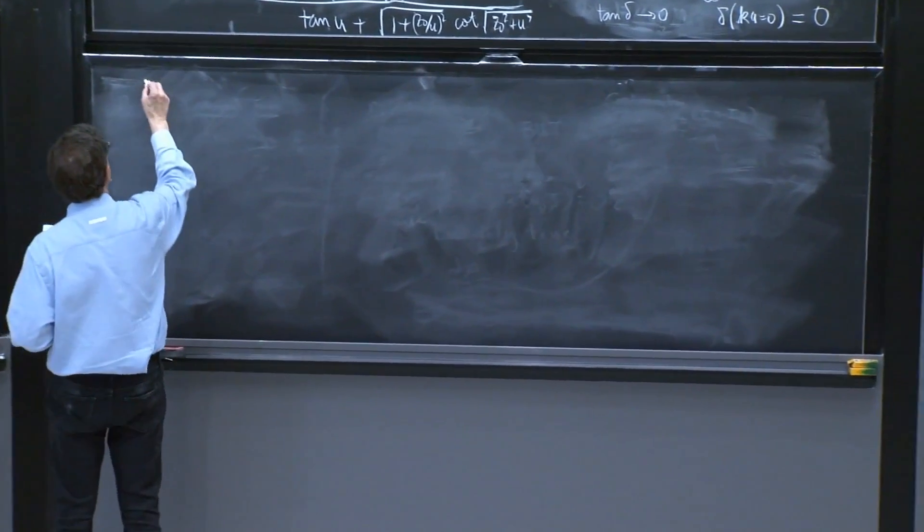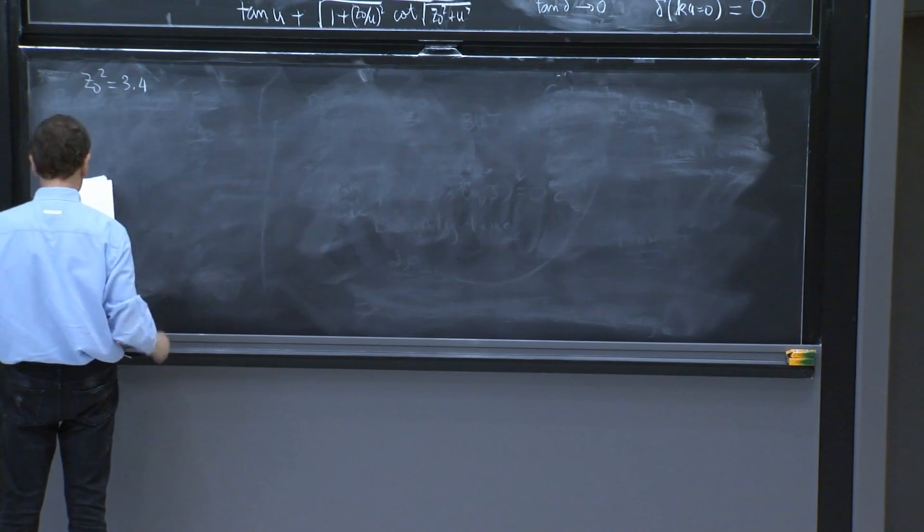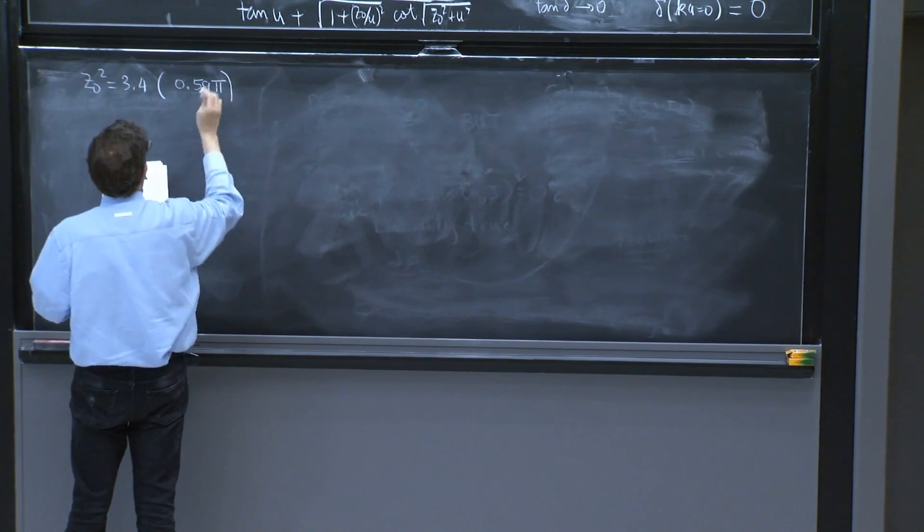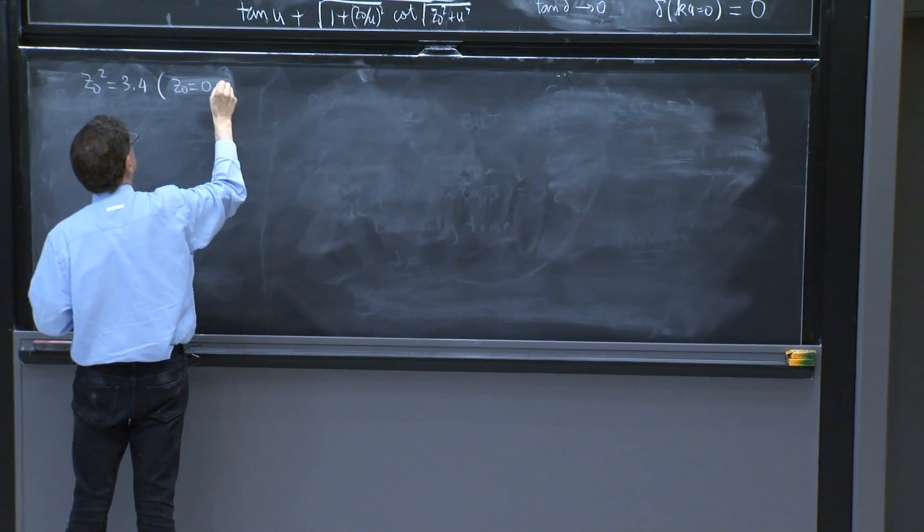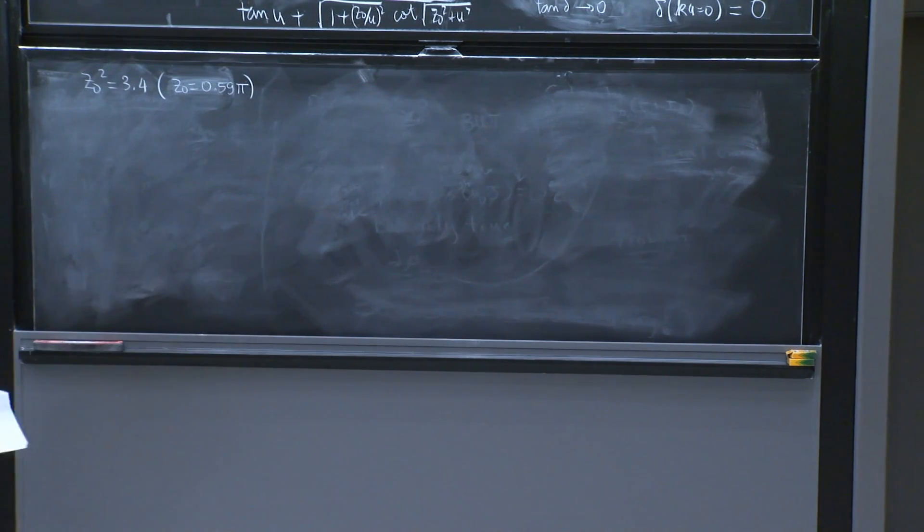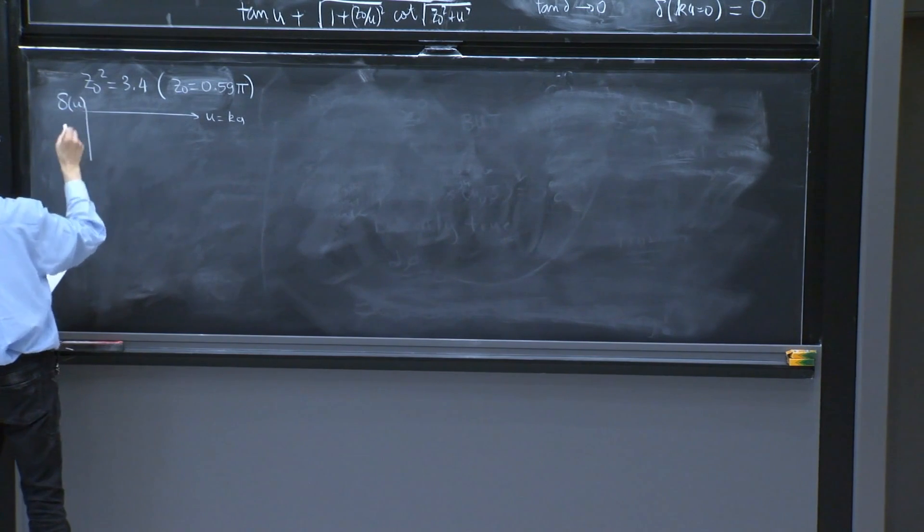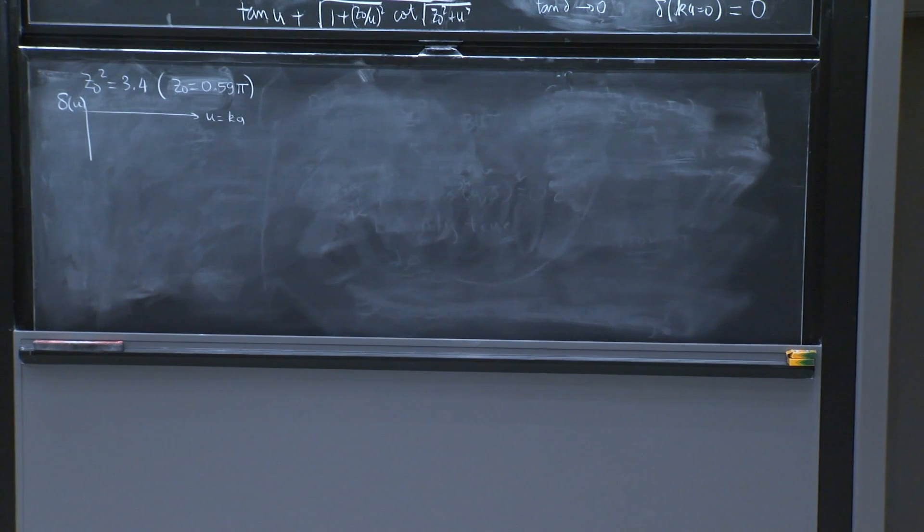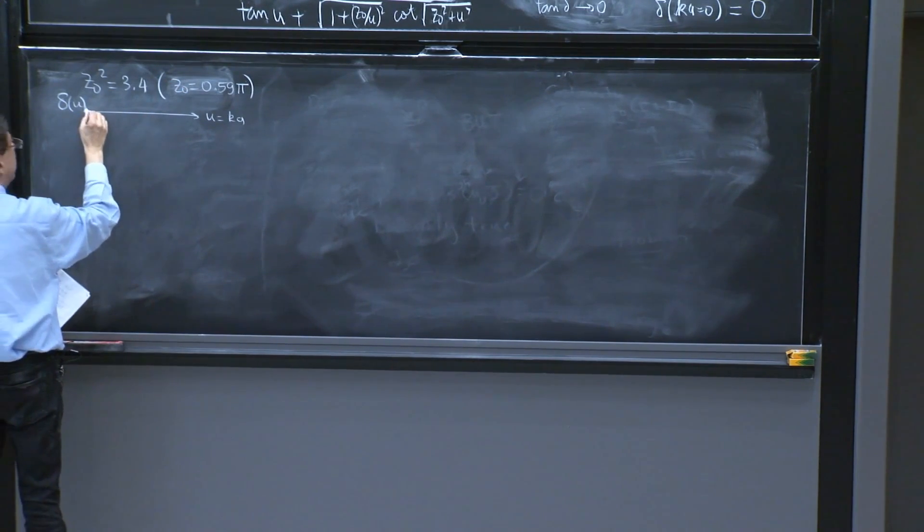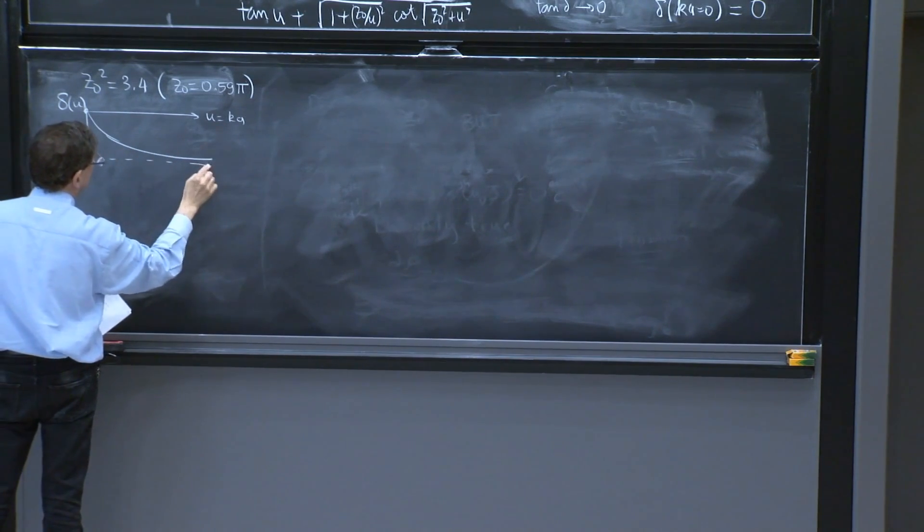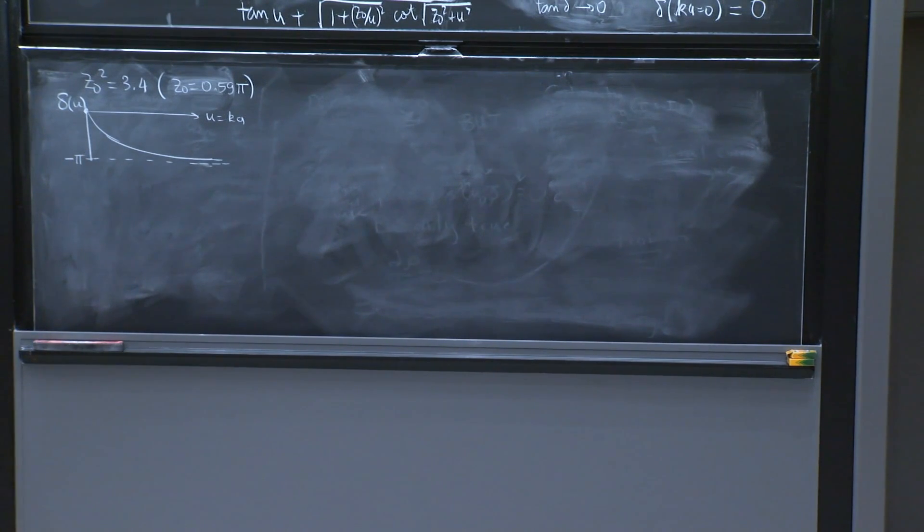Let me go here. So here is an example. z₀ squared equals 3.4. That actually corresponds to 0.59π for z₀. So here are a couple of plots that occur. So here is u equals ka, and here is the phase shift delta of u. You have the tangent of delta, but the phase shift can be calculated. And what you find is that yes, it starts at 0 as we mentioned. And then it starts going down, but it stabilizes at minus π, which is a neat number. That's what the phase shift does.